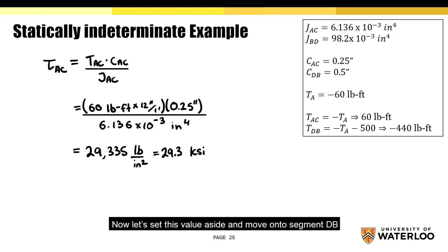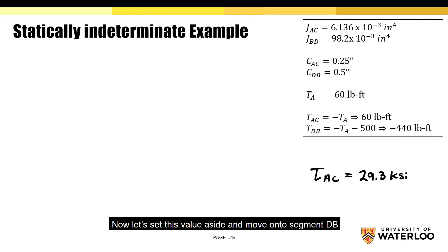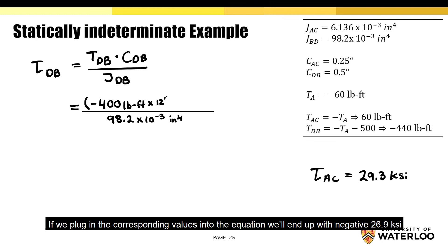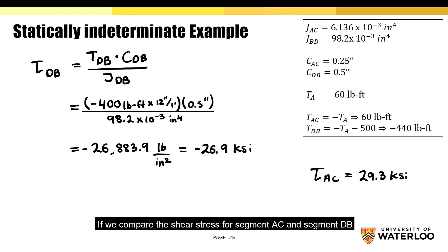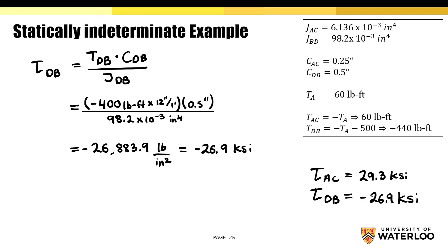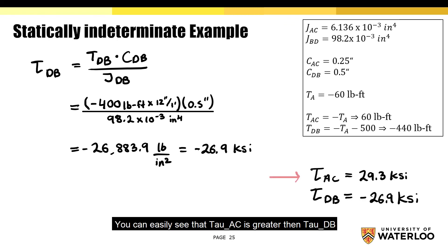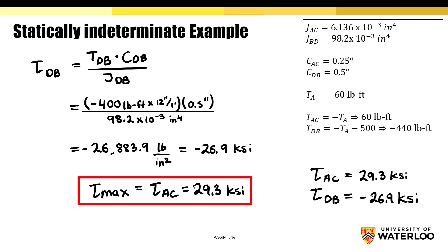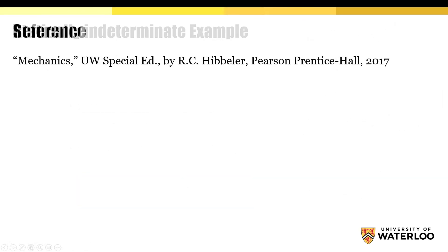Moving on to segment DB, plugging in the corresponding values gives tau-DB equals negative 26.9 KSI. Comparing the shear stress for segments AC and DB, tau-AC is greater than tau-DB. As a result, the maximum shear stress is equal to 29.3 KSI. This concludes the video for the example regarding statically indeterminate torque-loaded members.